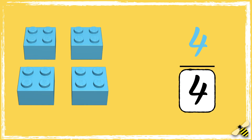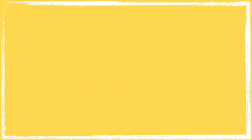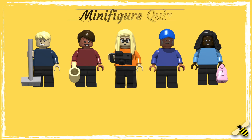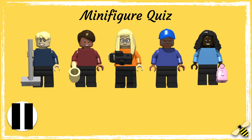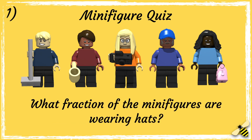Notice how the denominator hasn't changed — it's still four. That's because the whole amount has always been out of four. Here are five minifigures. Look at them carefully, as I'm going to ask you five questions about them and I want you to write down your answers as a fraction. You can pause the video after each question to give you time to think about your answer and write it down. We'll go through the answers at the end of the challenge. Question one: what fraction of the minifigures are wearing hats?